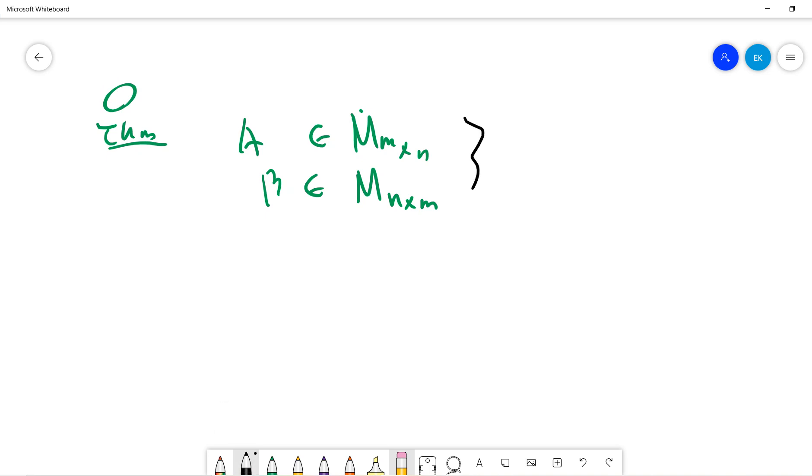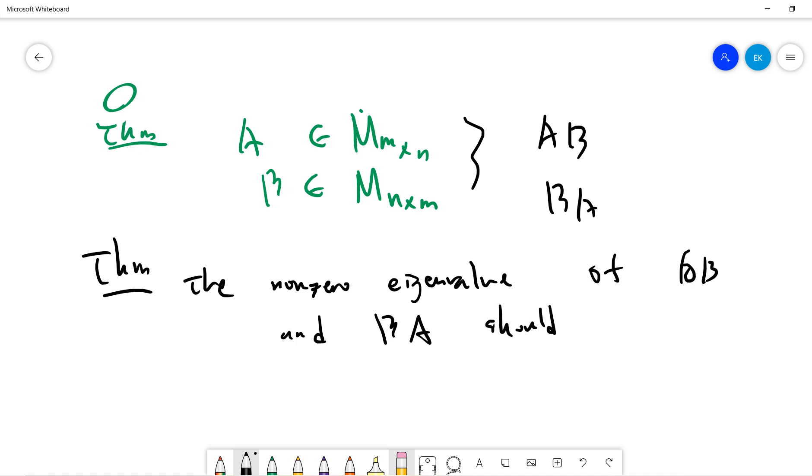So basically we can get two matrices, one is AB and one is BA. The theorem says that the non-zero eigenvalue of AB and BA, if you have a non-zero eigenvalue of AB and BA, it should be the same. It will be the same.